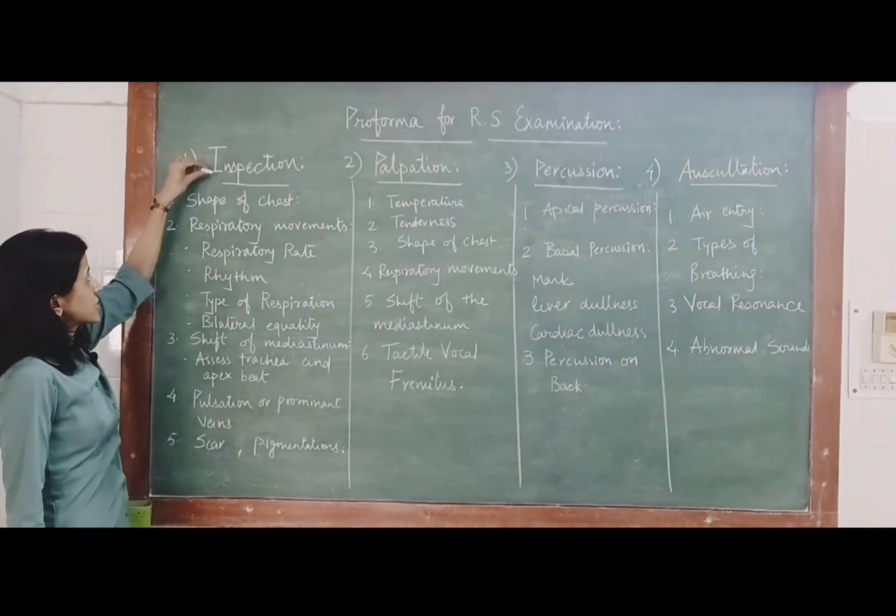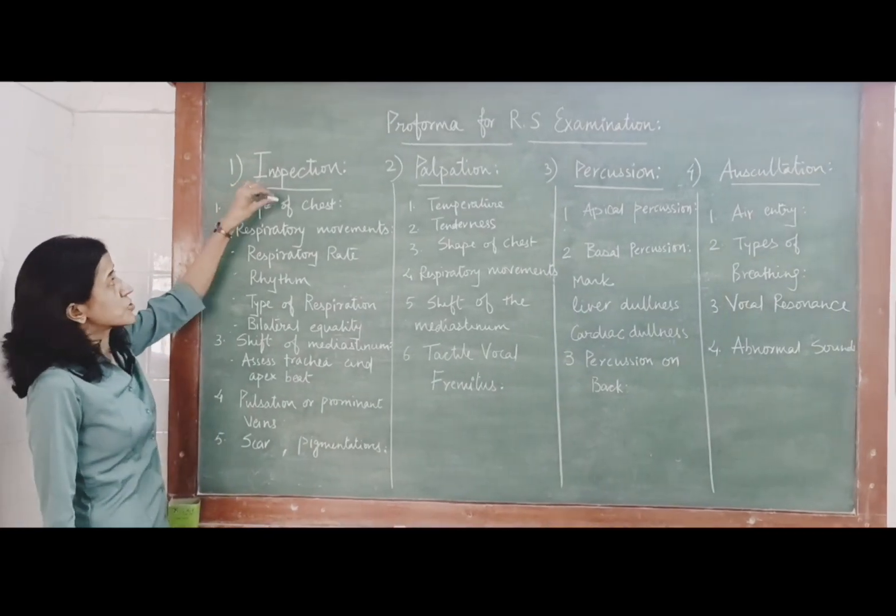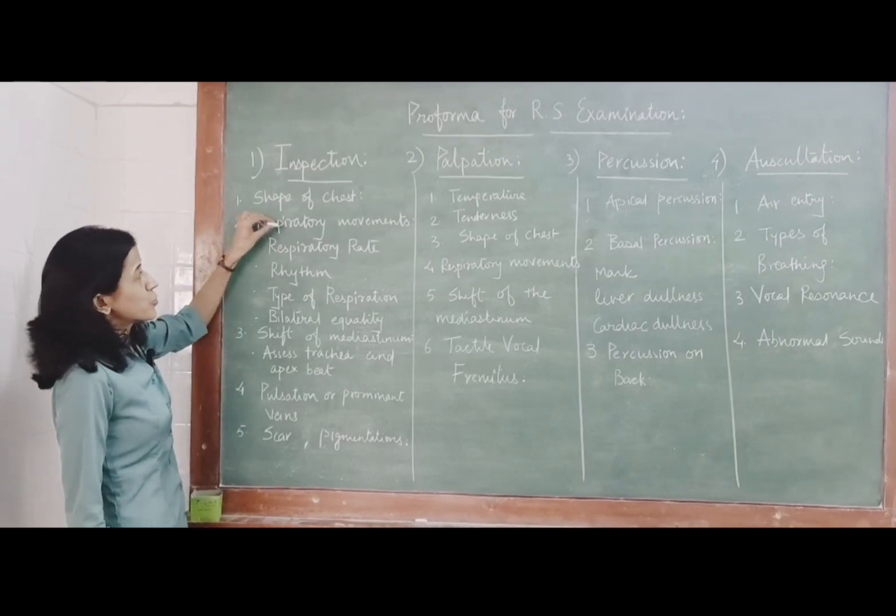Starting with inspection. First point to inspect is the shape of the chest. You have to write down whatever is your finding. Normal shape of chest is ellipsoidal. Second, respiratory movements.